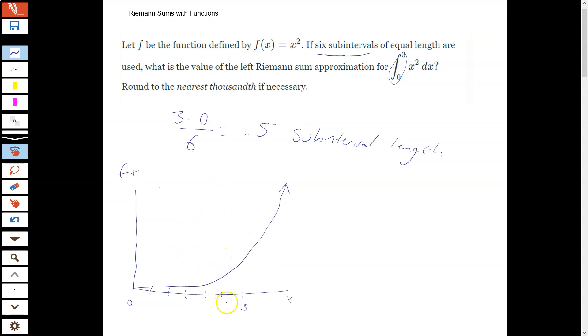And then these subintervals, well, 0.5, 1, 1.5, 2, 2.5. So we can draw them out. And then what kind of Riemann sum? We want a left Riemann sum. So we want our rectangles to have their left edge on the graph. I don't think you need to draw the whole thing. But if you do struggle with these, that's a helpful move.